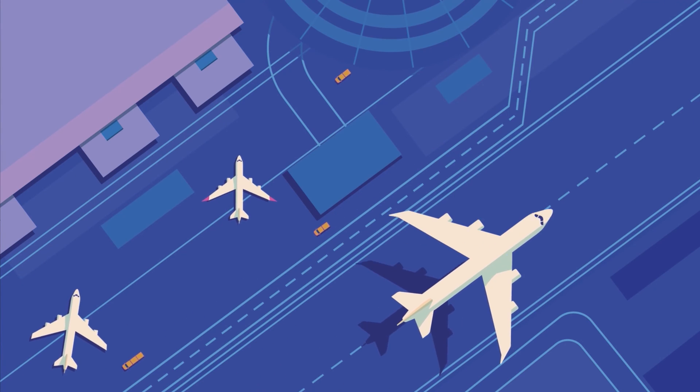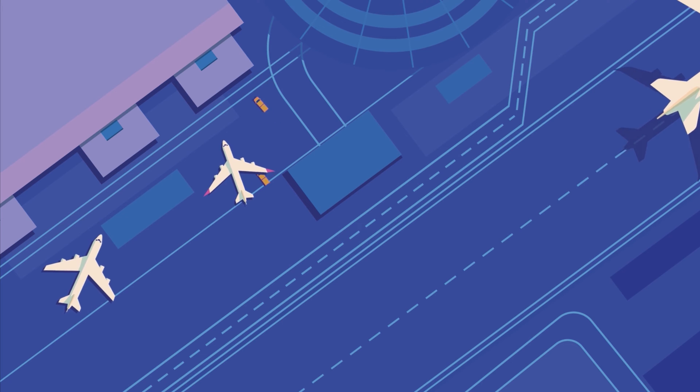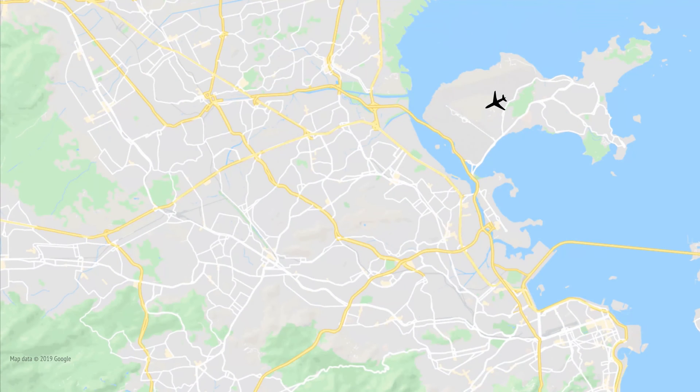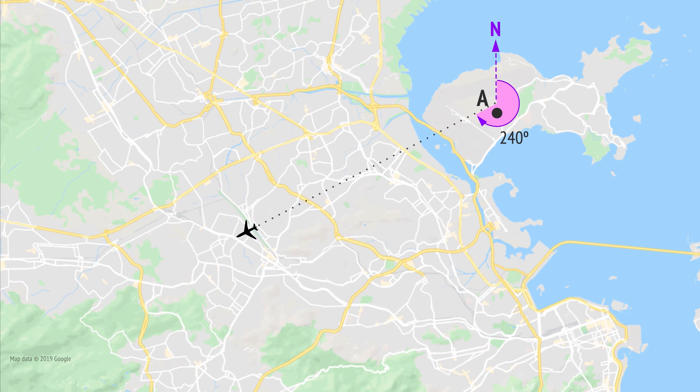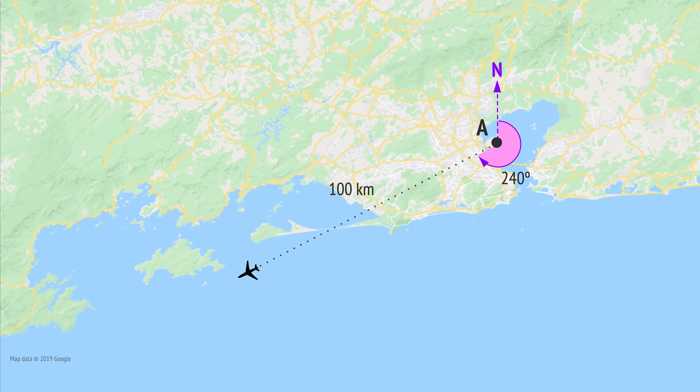We use bearings in navigation context to describe the direction of travel. In this problem, a plane departs an airport at A on a true bearing of 240 degrees. The plane continues on this bearing for a distance of 100 kilometres from the airport. How far west of the airport is the plane at this location?